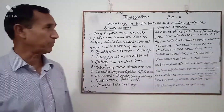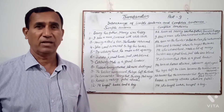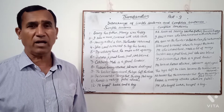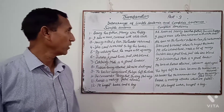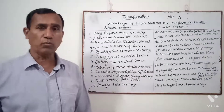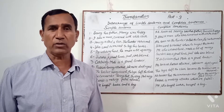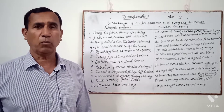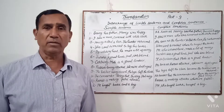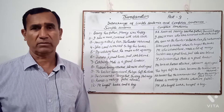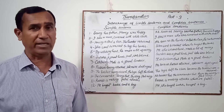Second example: "I saw a man covered with white cloth." Complex: "I saw a man who was covered with white cloth." Third example: "John went to market to buy his books." Complex: "John went to market where he bought his books." Fourth example: "By working hard, he made a lot of money." Complex: "He who worked hard made a lot of money."